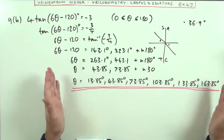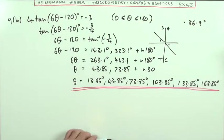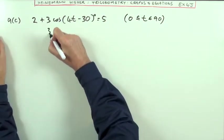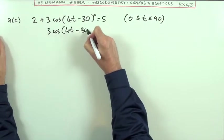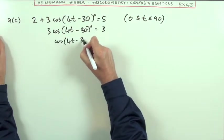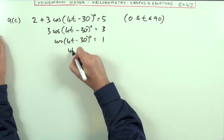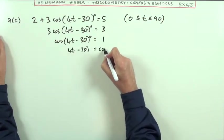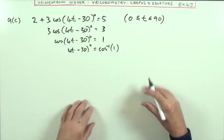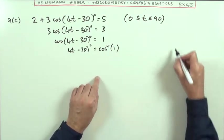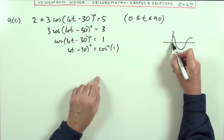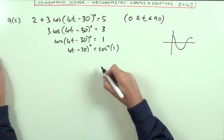For 9c, another compound angle. Take the 2 across and subtract, take the 3 across and divide, giving inverse cos of 1. For ones, zeros, and negative ones, don't use the CAST or calculator—the graph tells you. Cosine starts at 1 and finishes at 1, so it's 1 at 0 degrees and 360 degrees.